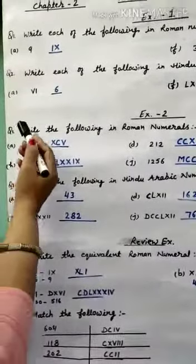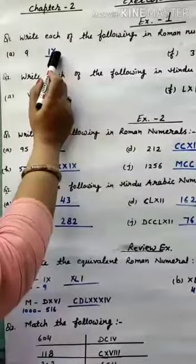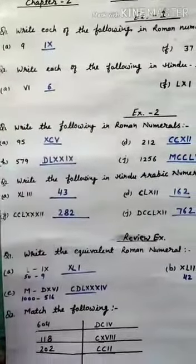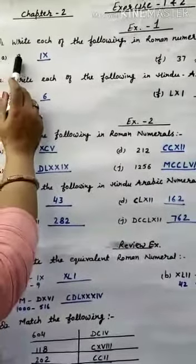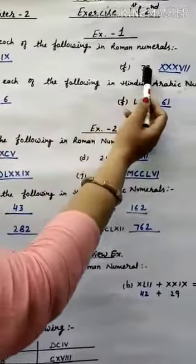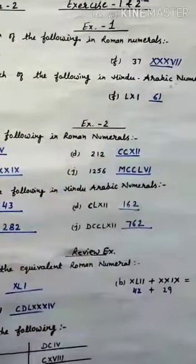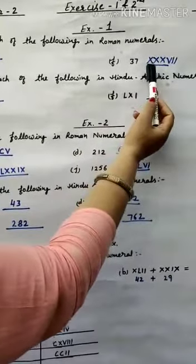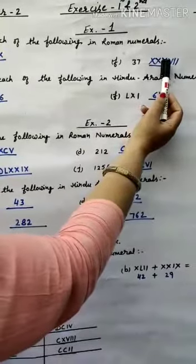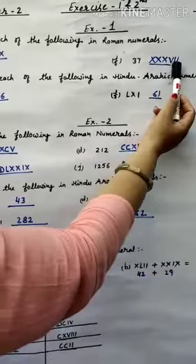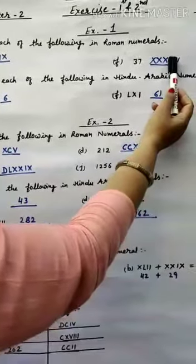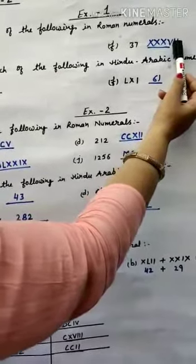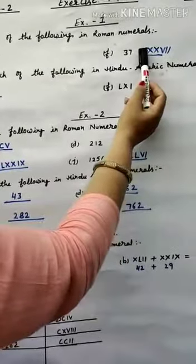What is 9? How will we write 9 in Roman Numerals? We will write X, meaning 10, and from 10 we will subtract 1, so we get 9. For 37: first we write 3X, meaning 30 (10+10+10). For 7, we take V (5) and add two I's to get 7.